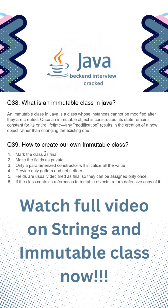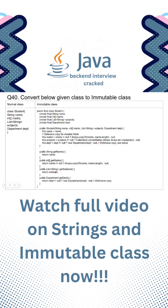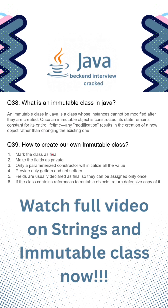The fourth point: we provide only getters and not setters. We have methods such as getName, getMarks, getSubjects, and getDepartment, and there are no setters in this class.